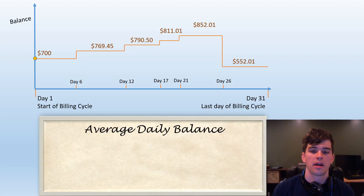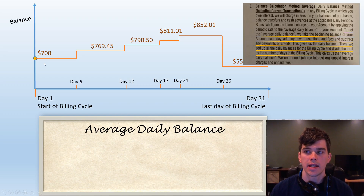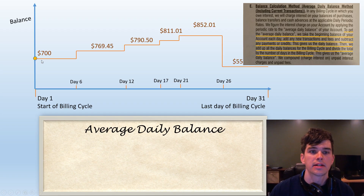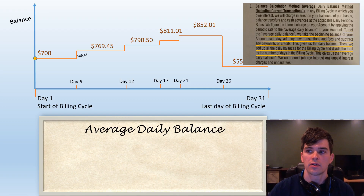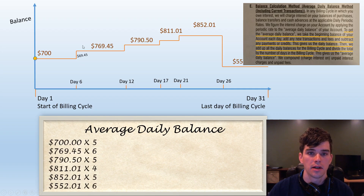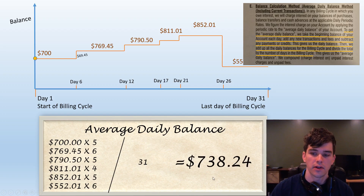Calculating your interest charge for this month comes down to the average daily balance. My credit card agreement says: to get the average daily balance, we take the beginning balance of your account each day, add any new transactions and fees, and subtract any payments or credits. So for days one through five the balance is $700; on day six we add $69.45, and so on. They calculate the balance every single day, then add up all the daily balances for the billing cycle — five days at $700, six days at $769.45, and so on — and divide by the number of days in the billing cycle, 31. This gives an average daily balance of $738.24.